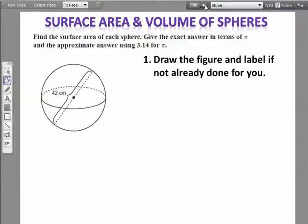You're going to draw the figure and label it if it's not already done for you. Notice that this 42 is your diameter, so you're going to have to divide it by two to get the radius.